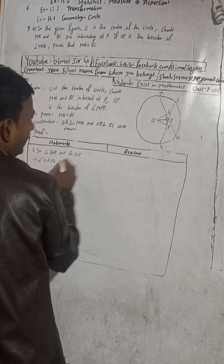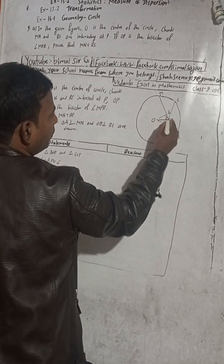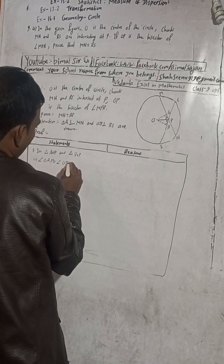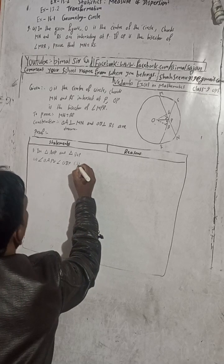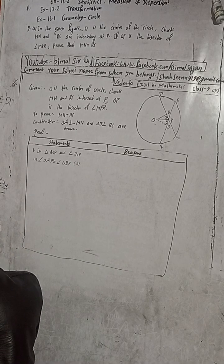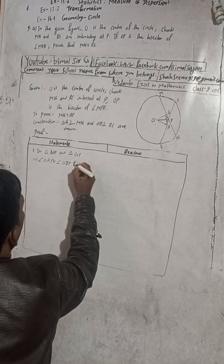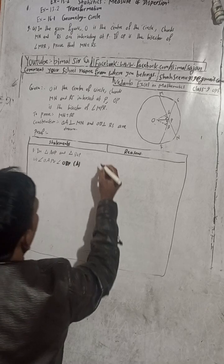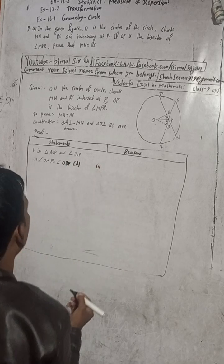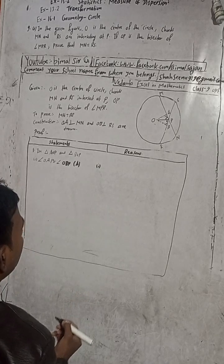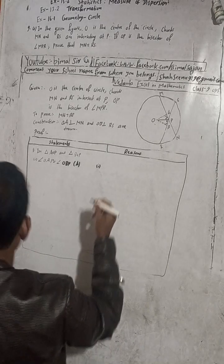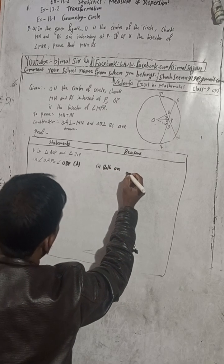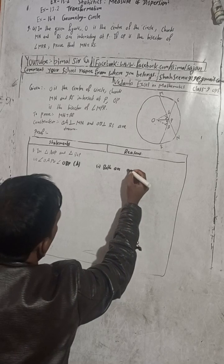Angle OAP is equal to angle OBP. Now you can write here the reason for this: both are right angles.